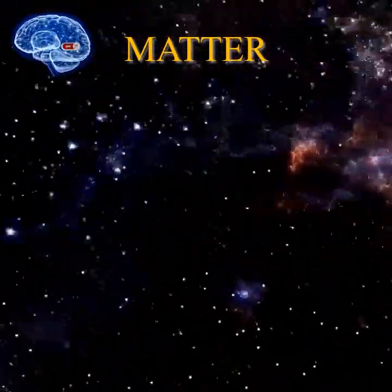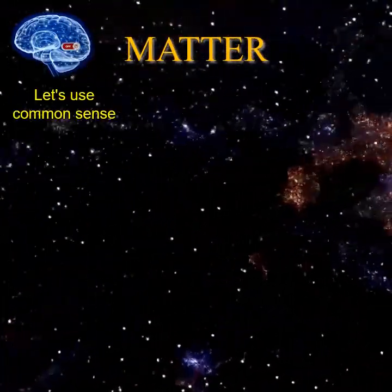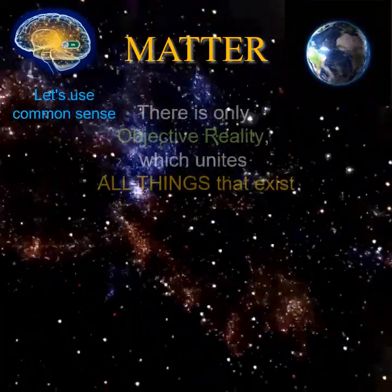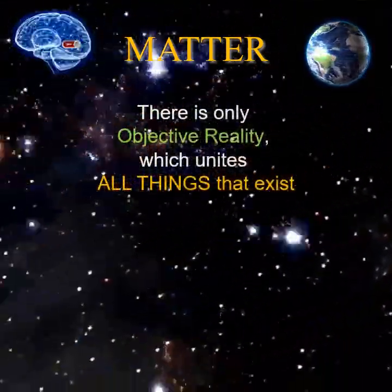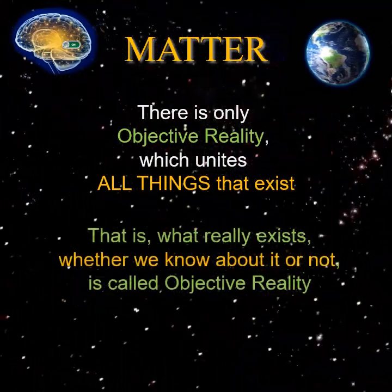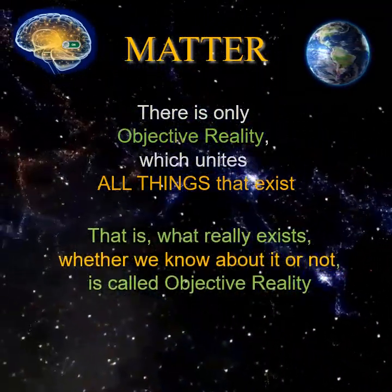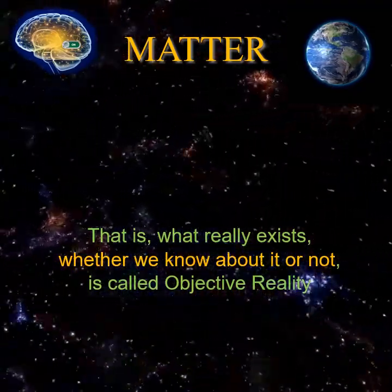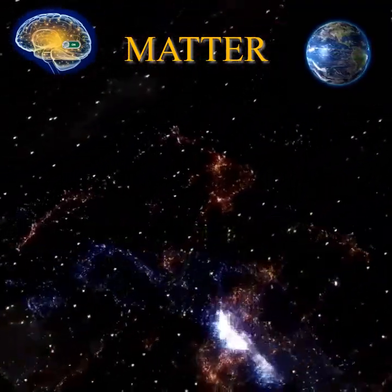Let's start with general logical reasoning to understand what matter is. There is only objective reality which unites all things that exist. What really exists, whether we know about it or not, is called objective reality. This objective reality will be called Matter for short, but with a capital letter, because it is the only thing that really exists.